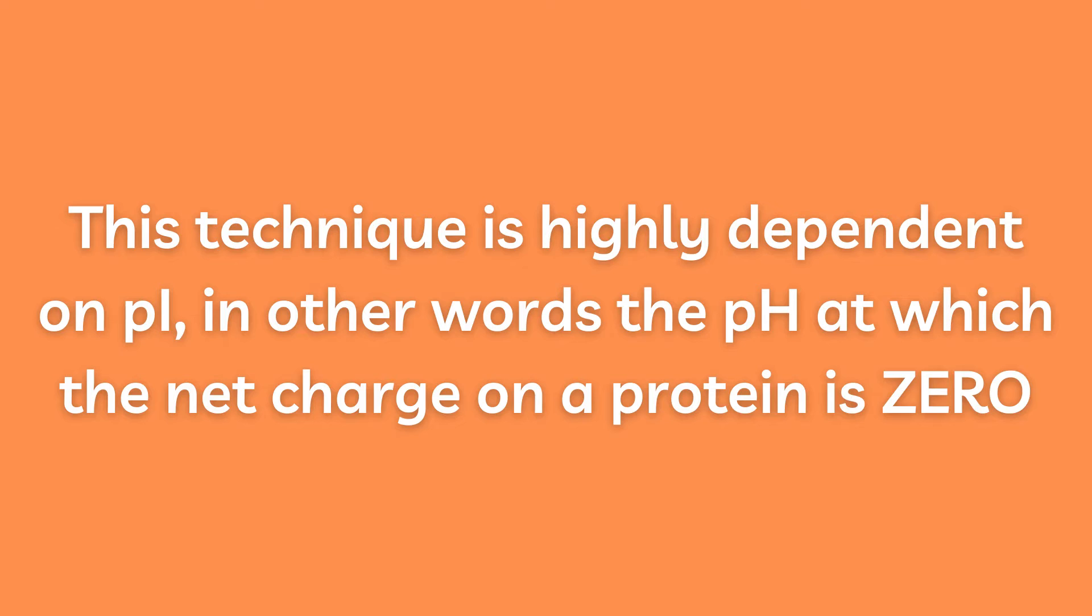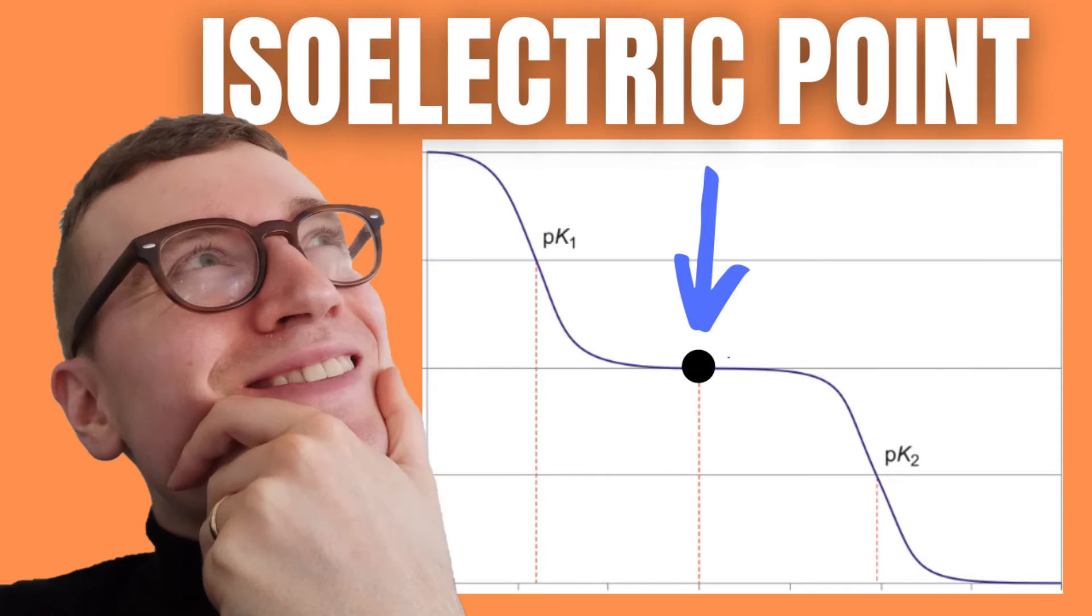Each protein has an isoelectric point, Pi, which is the pH where its overall net charge is equal to zero. If you are confused by isoelectric point I have a video on the topic which I link by the end of this video.